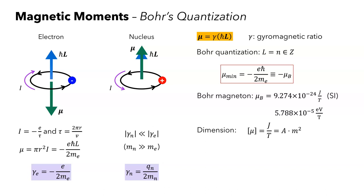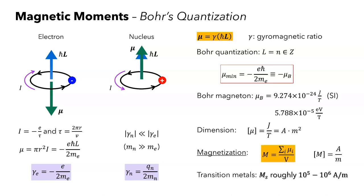With the definition of Bohr magneton and magnetic moment, the magnetization — which is the central quantity of this talk — is defined as the volume density of magnetic moments. We simply sum over all the magnetic moments within a certain volume and divide by the volume. The dimensions of magnetization turn out to be ampere per meter. The typical values of magnetization in transition metals is on the order of 10 to the 5th to 10 to the 6th ampere per meter.